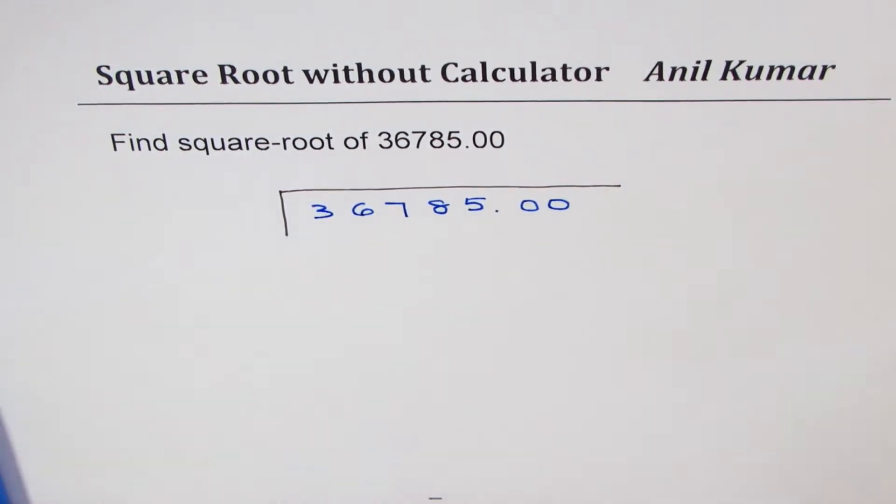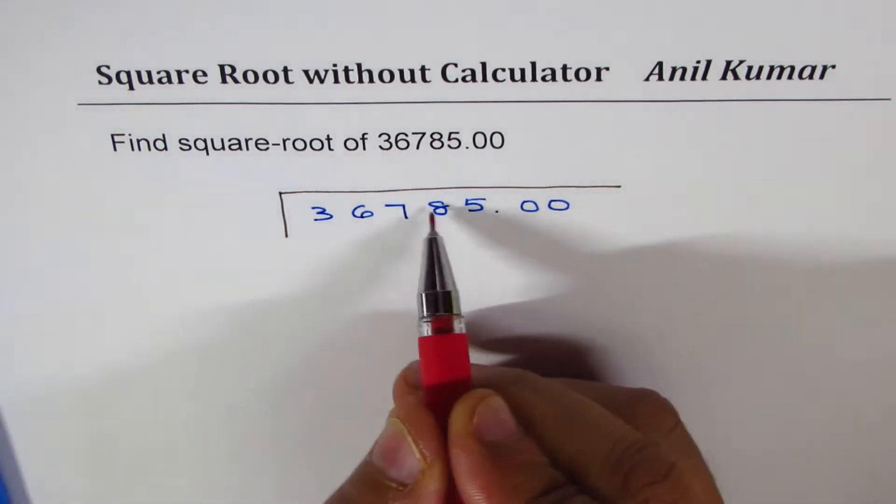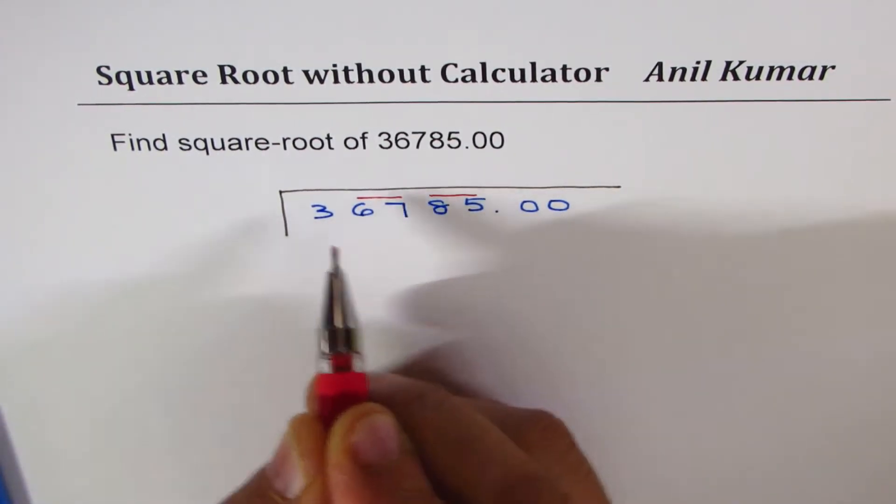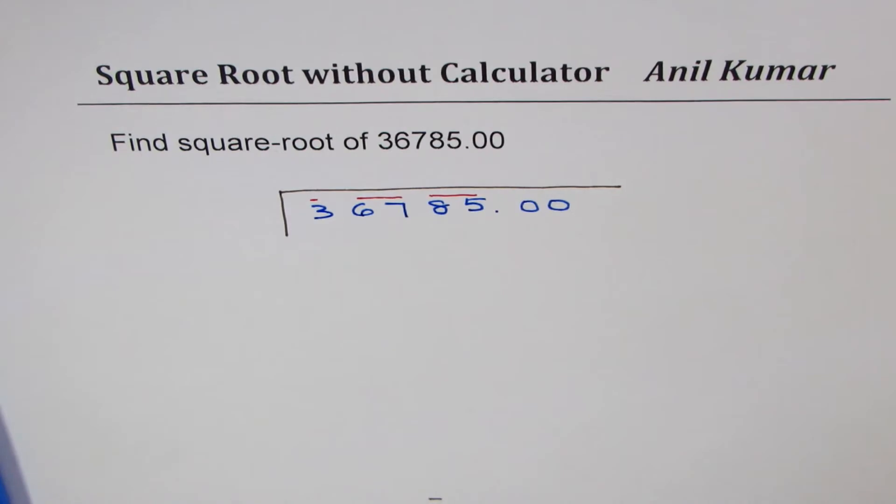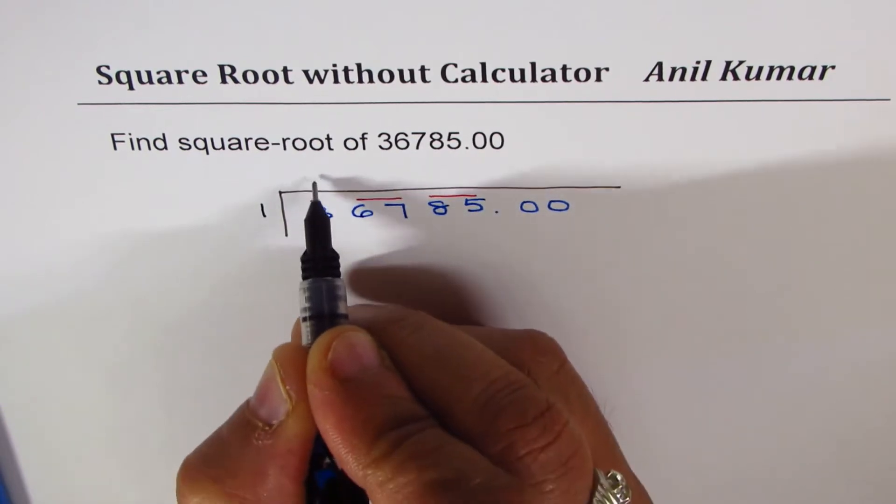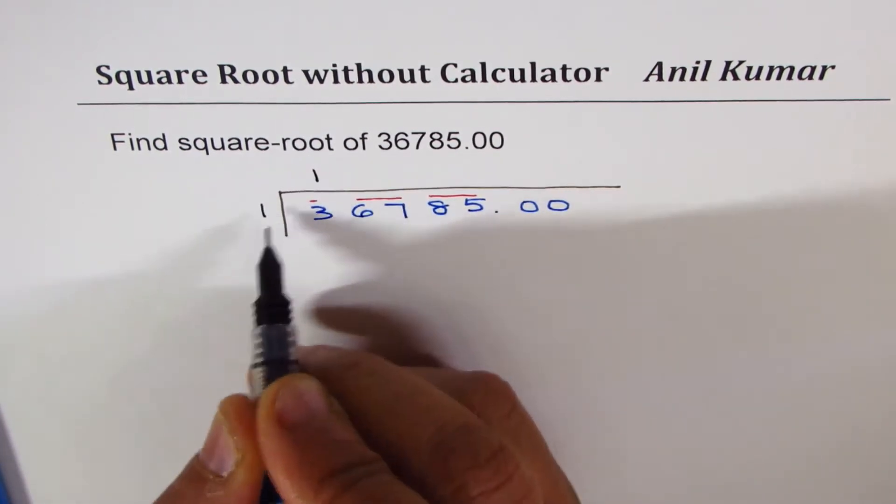We begin by making groups from the decimal going left, so groups of twos. Three is left alone. That is the first step. Now three could be divided by one, one times one. Whatever number we write in the divisor, we write the same number in the quotient also.